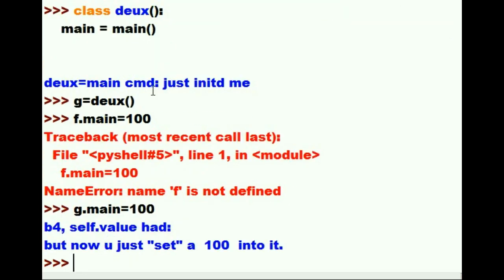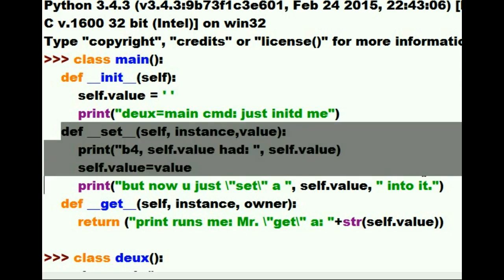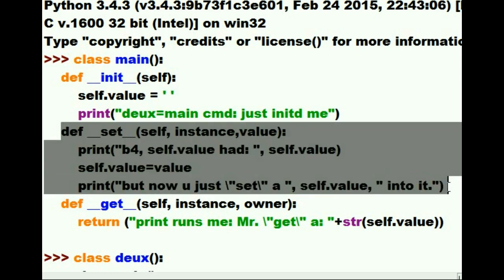Oh, before self.value had, and a blank. But now you just set a 100 into it. So, this command triggered the execution of the double underscore set method.